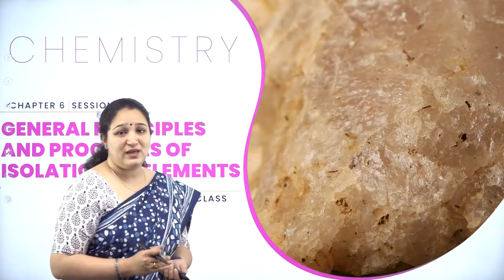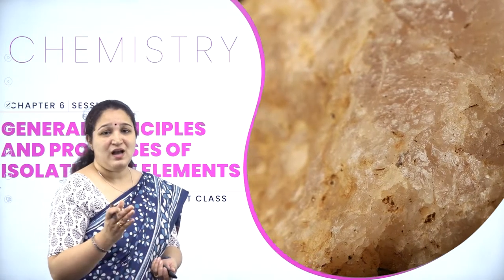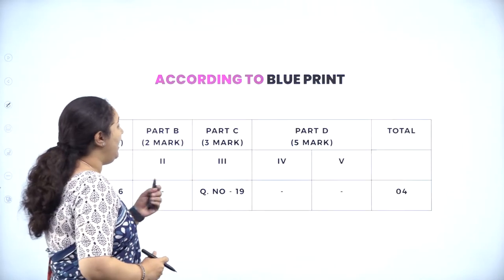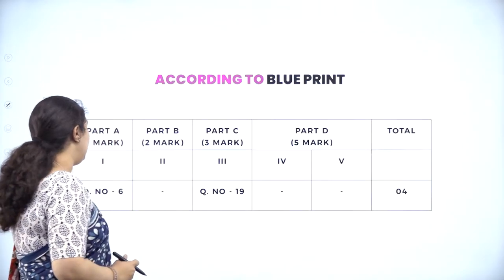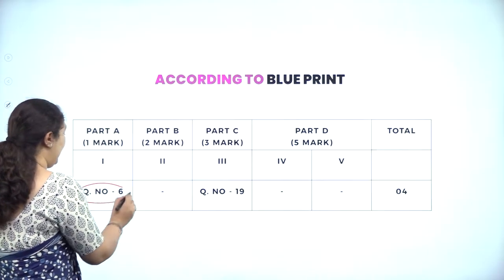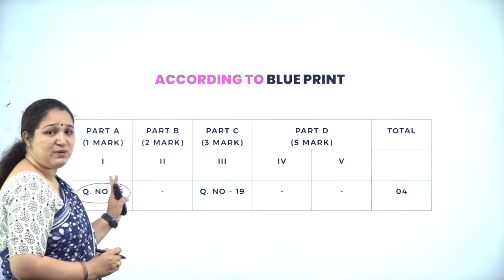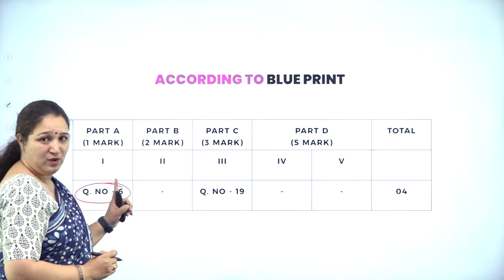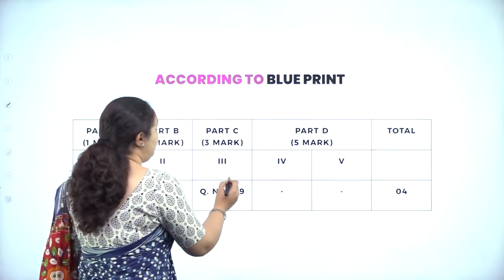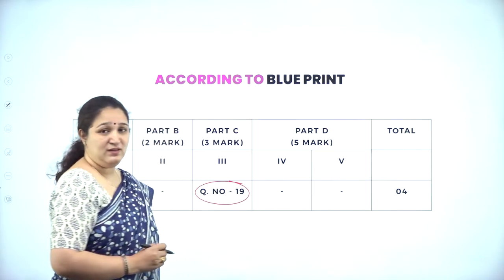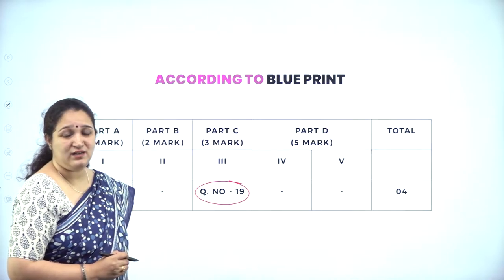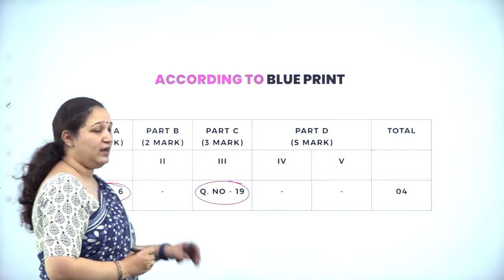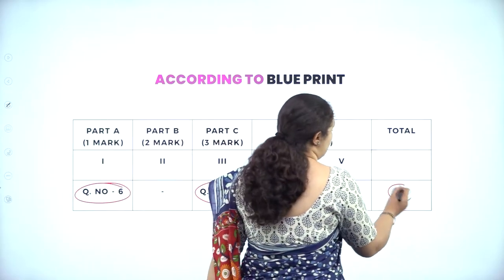Before I go into the introduction of the chapter, we look into the weightage of this chapter. According to the blueprint, Part A — usually question number six — carries one mark. In Part C, the three-mark section, question number 19 is usually from this chapter. So three plus one, it is four marks weightage.